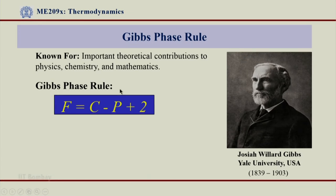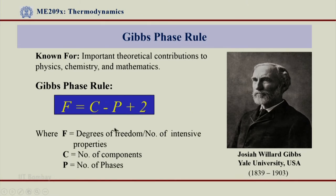Gibbs phase rule is very famously given by the formulation F = C − P + 2, where F is the degrees of freedom, or the number of intensive properties. When I say degrees of freedom, it means how many properties there are which I can vary while still remaining in the same phase. One can also define it as how many intensive properties are required to define a particular thermodynamic state of a thermodynamic system.